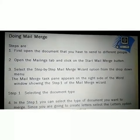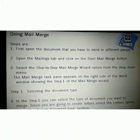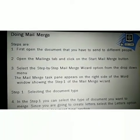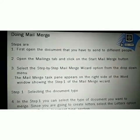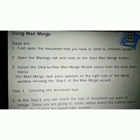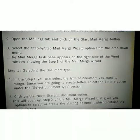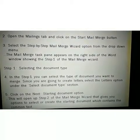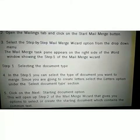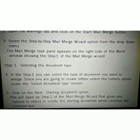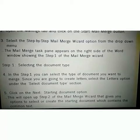Let's start doing Mail Merge. Steps are: first, open the document that you want to send to different people. Then open the Mailing tab and click on the Start Mail Merge button. Third, select the Step-by-step Mail Merge Wizard option from the drop-down menu. Then the Mail Merge task pane appears on the right side of the Word window showing Step 1 of the Mail Merge Wizard. Step 1 is selecting the document type — you can select the type of document you want to merge. Since you are going to create letters, select the Letter option under the Select Document Type section. Then click on Next: Starting Document, which will open Step 2 of the Mail Merge Wizard, giving you options to select or create the starting document containing the common text.